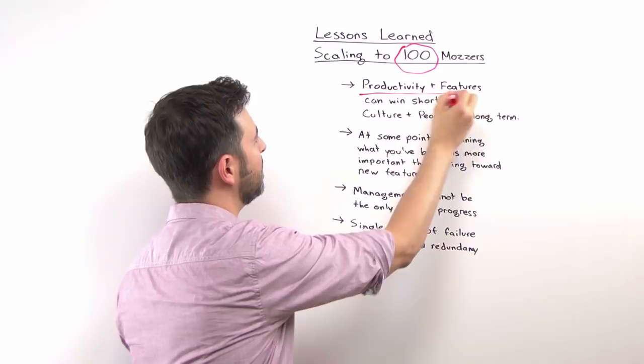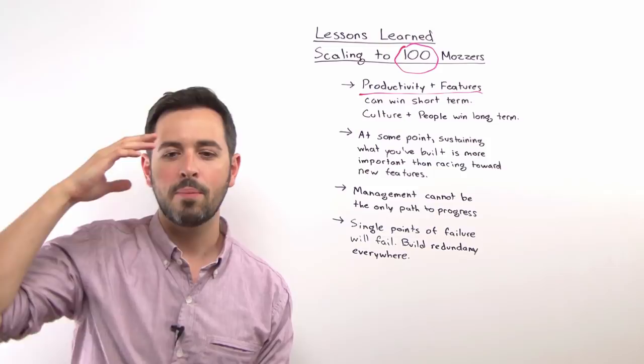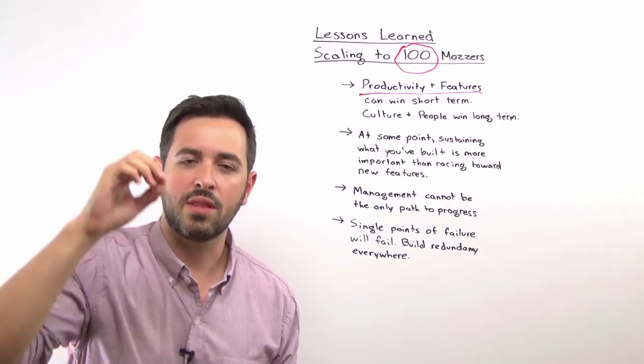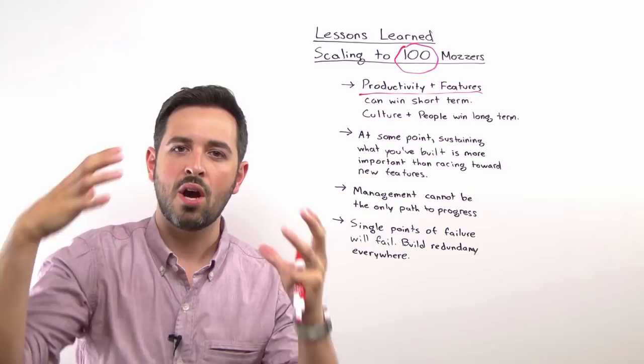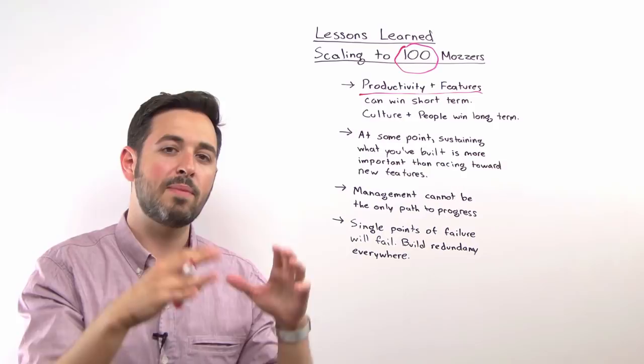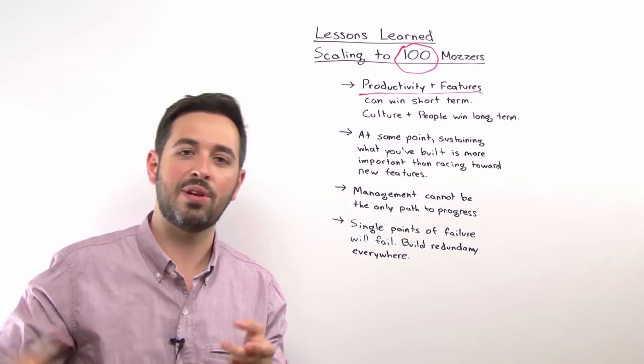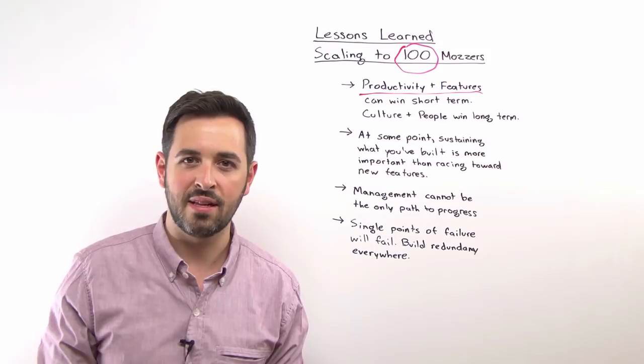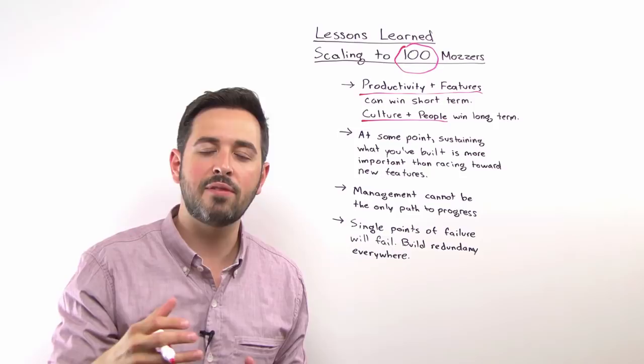One is that productivity and features can win short term. A lot of the time when you're building a company, I know I was like this. I mentored some tech stars companies and talked to a lot of early stage startups. They have this thing too. They think that the accomplishments I need to make are all inside the product. The product and the features are really what's going to build and sell the company. It's true. I agree with that to some degree, but that's a short term kind of win. What I mean when I say that is that that will not necessarily attract great people to your company. It will not necessarily build a long term repeatable scalable business model. It will not necessarily build up a culture that can hold up to challenges that you'll almost certainly face as you grow and scale. What will do that are culture and people.